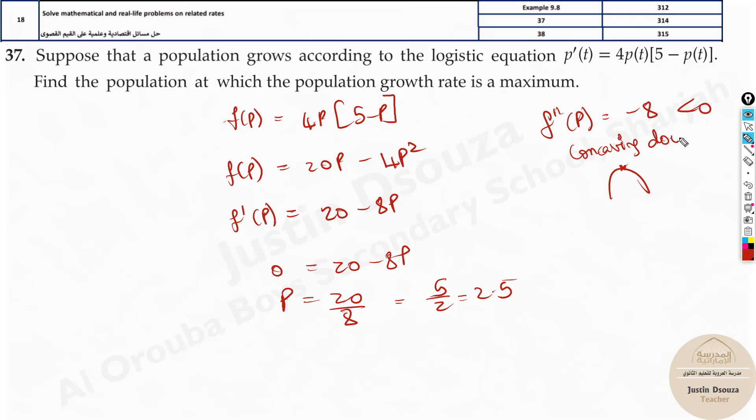Concaving downwards. If it's concaving downwards, then maximum point only can exist. So maximum point. Therefore, you have just proven it is maximum.